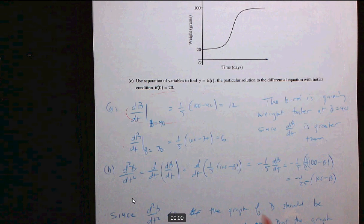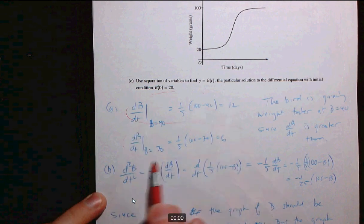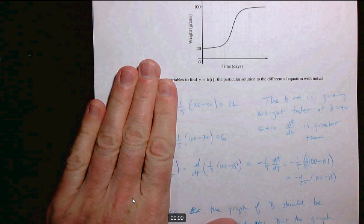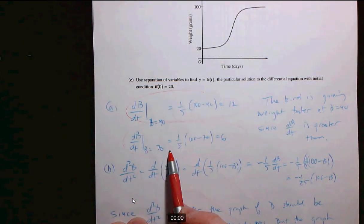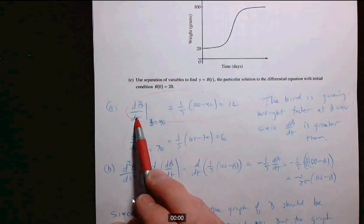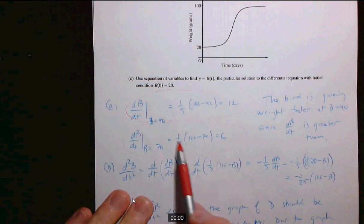Number one, you need to make explicit this connection between db/dt and these numbers. So some of you just had sort of this computation and you said well 12 is greater than 6, therefore it's gaining weight faster at 40. But you need to write this equation explicitly. You need to make this connection that this is the rate of change of the weight of the bird. So that's one thing.